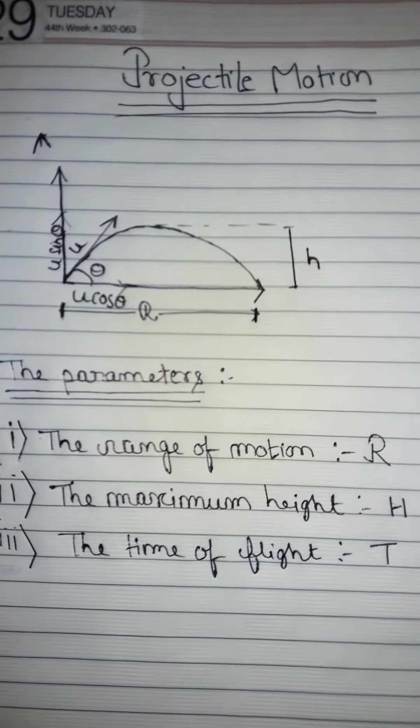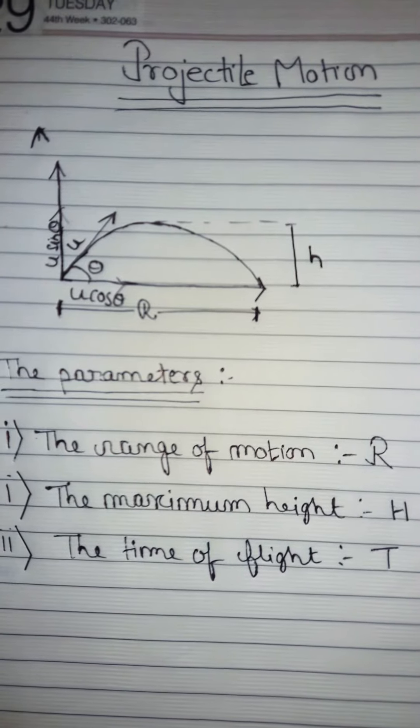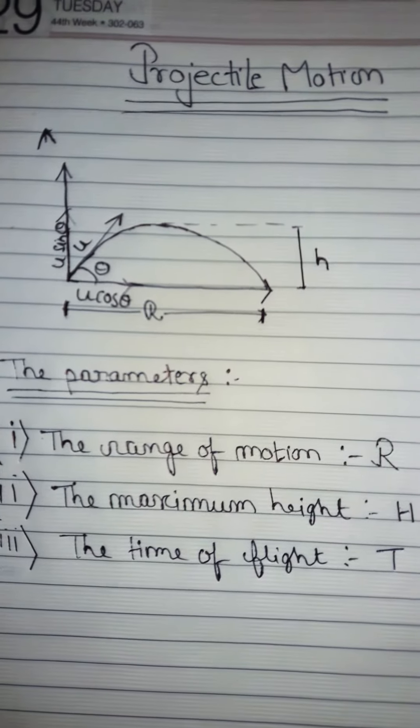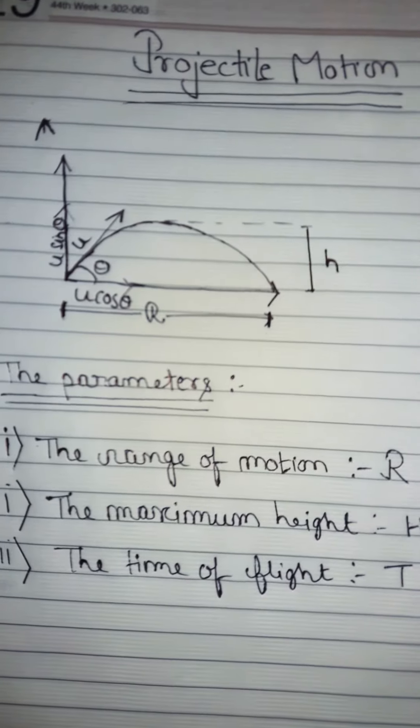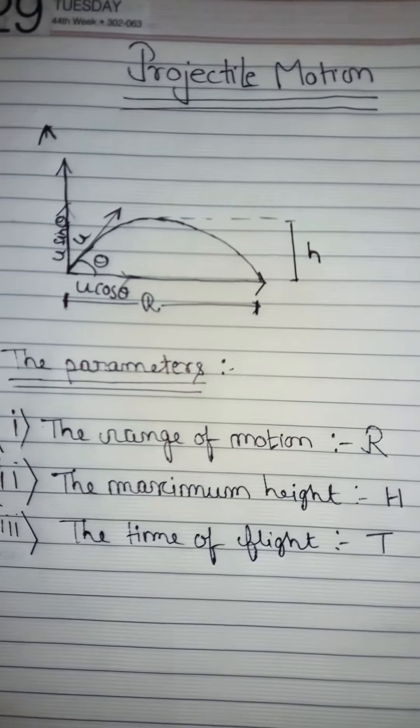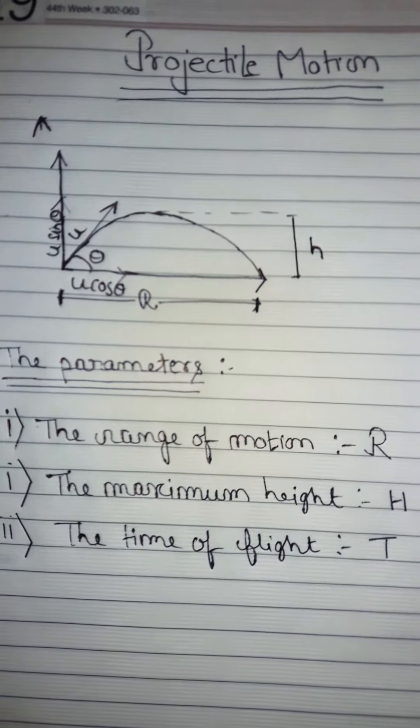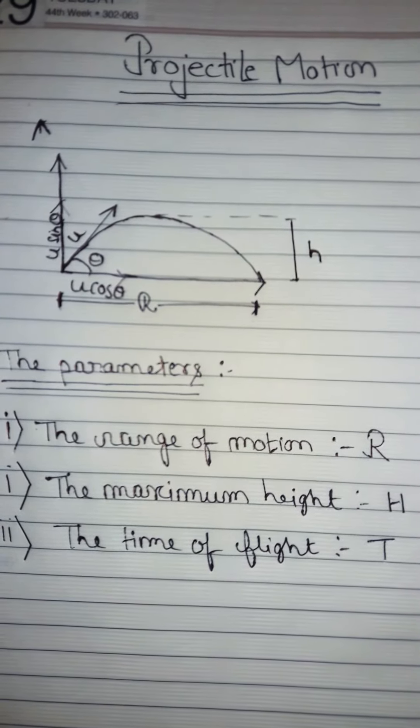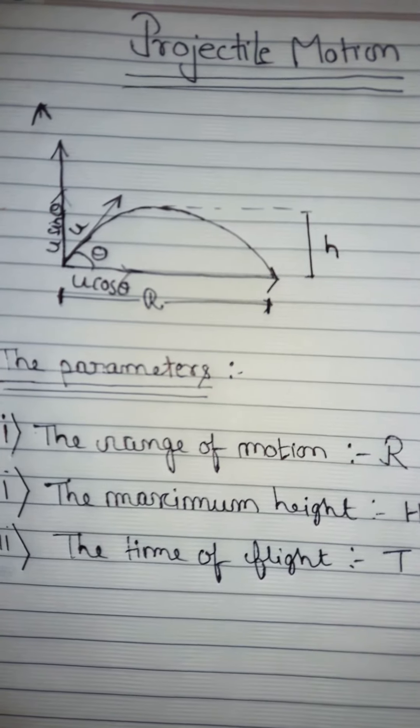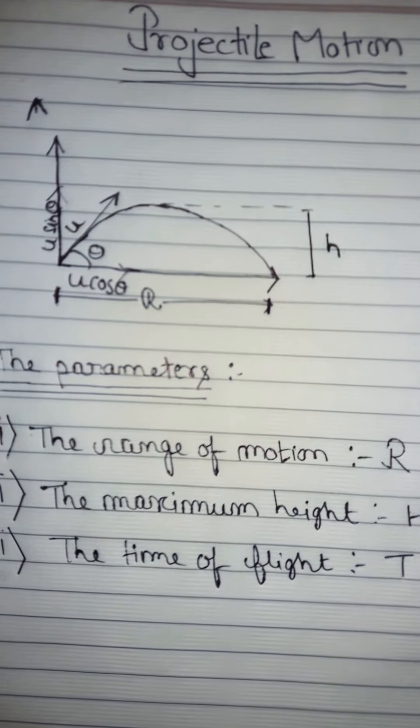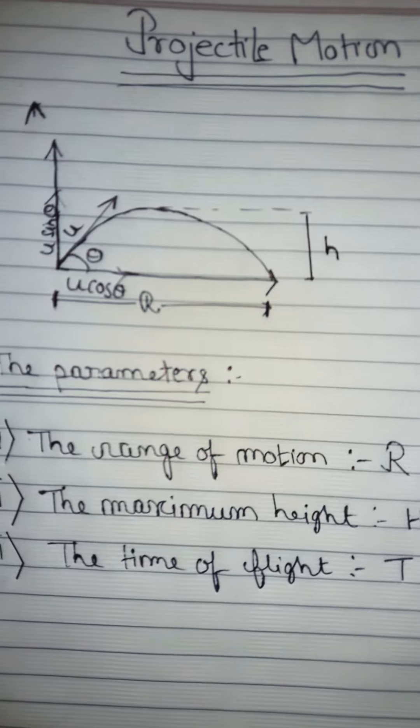...which is the maximum height the projectile attains during the motion. And the third one is the time of flight T, which is the total period of time the projectile is in the air.